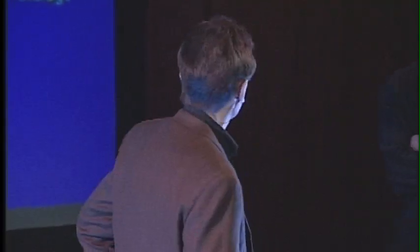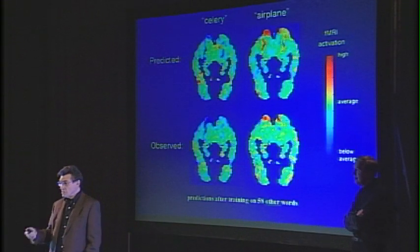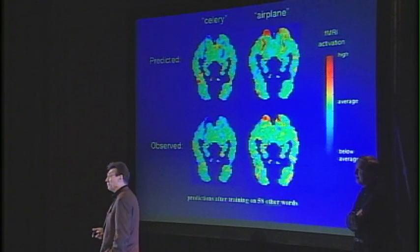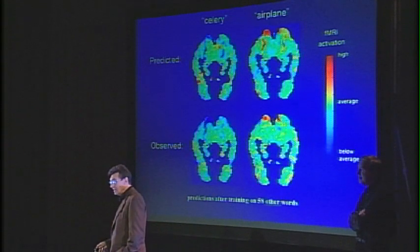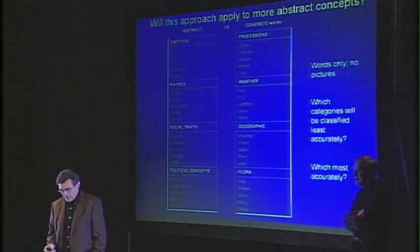Tom has talked a little bit about the structure of ideas and our analysis of them, and I'm going to tell you a little bit more about the nature of ideas that come from the brain — how they're represented there, and how we work with them.